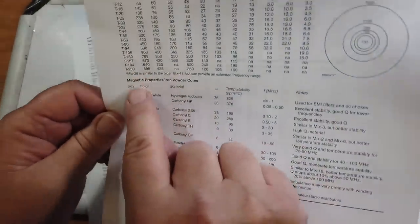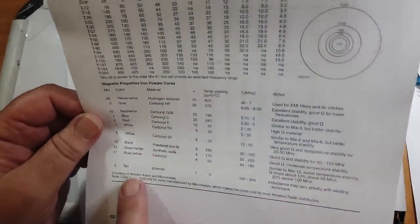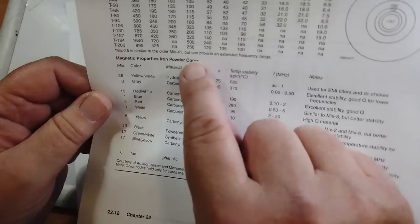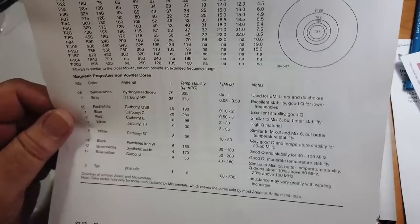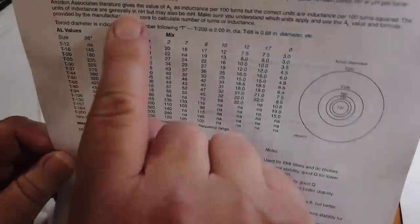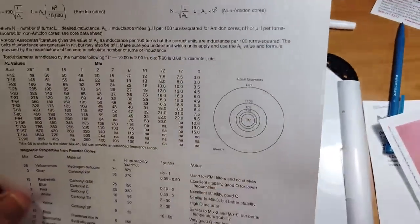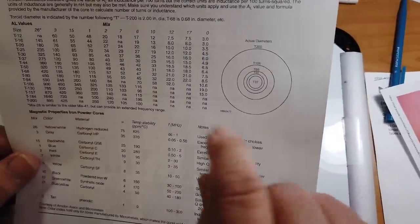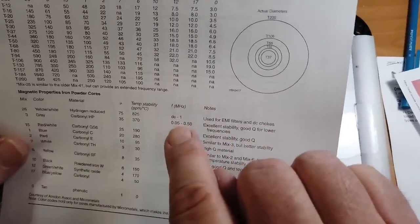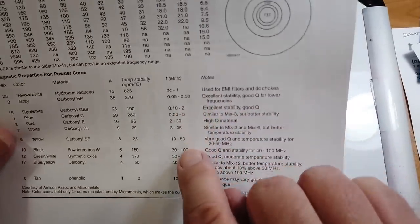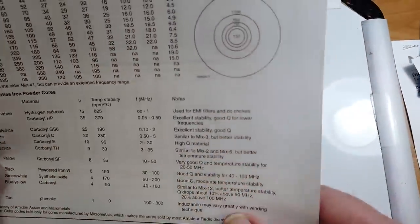Now down here, there is the different mixes, the colors, again, Amidon and micrometals. And you see the material that they're made out of. What the mu is, that's the permeability. And that goes into the equations up here when you try and figure out exactly what the thing is. So mu and then here is the frequency over which you might want to use them in megahertz. And then some notes for what they're good for.